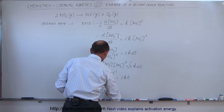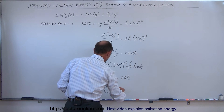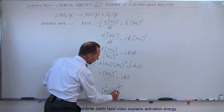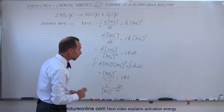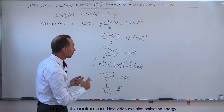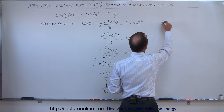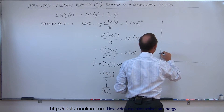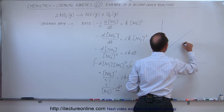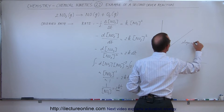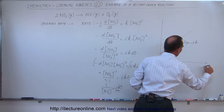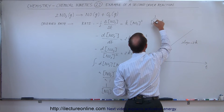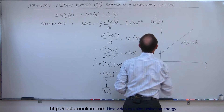The negatives cancel out, and we can write this as: one over the concentration of nitrogen dioxide equals 2kt. Notice that the slope is twice the rate constant. If we graph this, the horizontal axis is time and the vertical axis is one over the concentration of nitrogen dioxide gas, with slope equal to 2k.